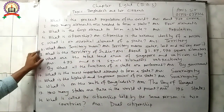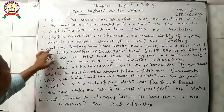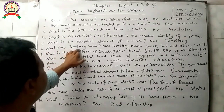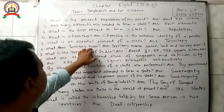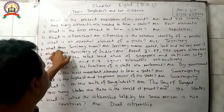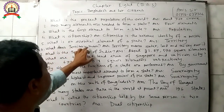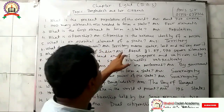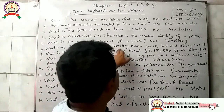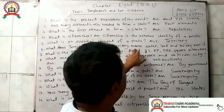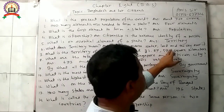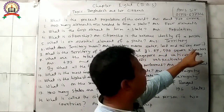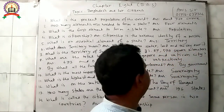Question 6: What does territory mean? Answer: Territory means water, land, and the sky over it.